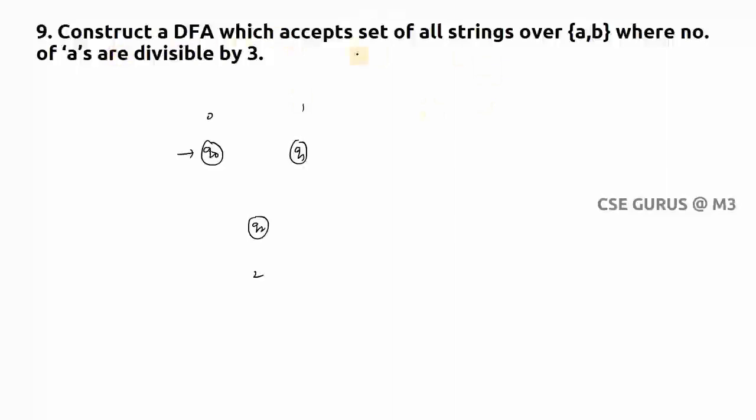Now it is only with respect to a's, not with b's. So I'll take single 'a' here which goes to q1, that is remainder one state. If I give two a's, it has to go to remainder two state.